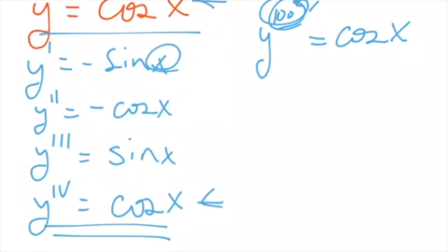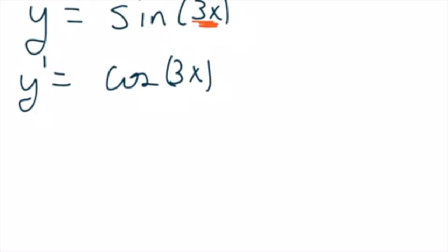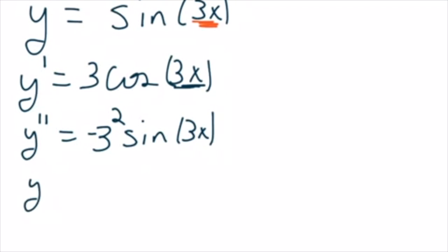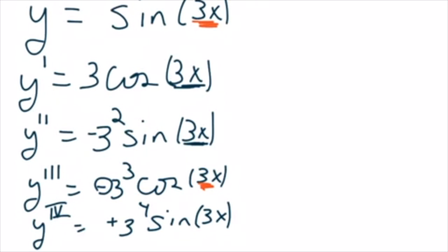Sometimes we throw in an argument with a chain rule. So let's say y equals sine of 3x. Don't be scared — just follow the pattern. y prime is cosine of 3x, but don't forget the inside derivative has to pop out, giving a factor of 3. y double prime: inside derivative pops out again giving 3 squared, and derivative of cosine is negative sine of 3x. y triple prime: inside derivative gives 3 cubed, negative hangs around, derivative of sine is cosine of 3x. The fourth derivative gives 3 to the fourth, and we're back to positive sine of 3x — literally back to where we started with the multiplier 3 raised to the fourth power.